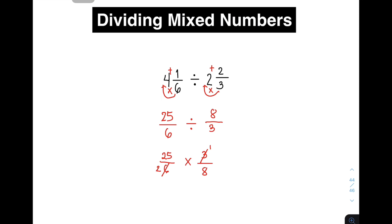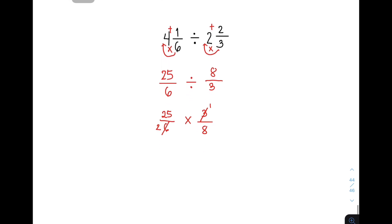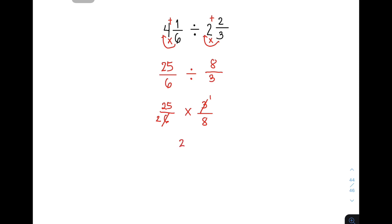So, sa part na yan, mas limit yung number na kailangan natin i-multiply. So, continue natin. 25 times 1 that will give you 25. And then your denominators is simply 16 because you have 2 times 8. So, this is your answer. 25 over 16.